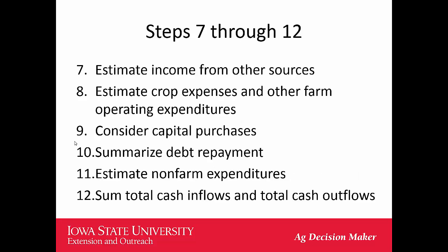Step seven is estimating income from other sources, because there may be additional sources important to the farm business. Then there are crop expenses — we allocate those out by timing, not just amount, because that's why you're doing a cash flow budget. These expenses don't all occur in January and get paid in December. Then consider capital purchases; you may push some off after seeing the full picture. Finally, when is debt repaid, what are non-farm expenditures like family living, and the spreadsheet sums everything to provide total cash inflows and outflows.